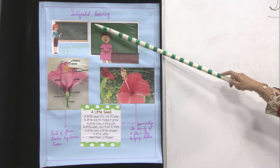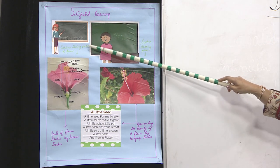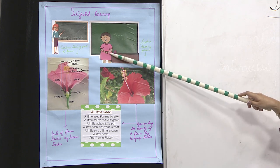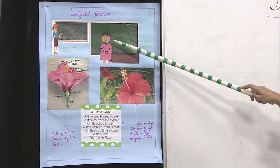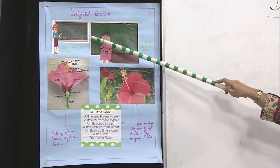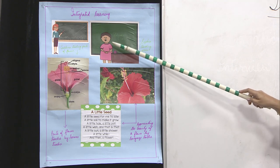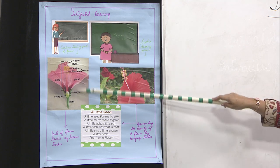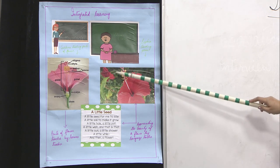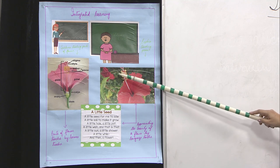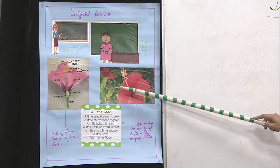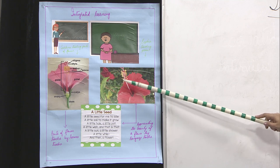Let us consider a situation here with the help of a chart. Ms. Sushma teaches science while Ms. Sophia teaches English language in the same class — class 6. While Ms. Sushma was teaching the characteristics of different parts of a plant systematically, Ms. Sophia was trying to develop appreciation of beauty in nature through a poem in the text.